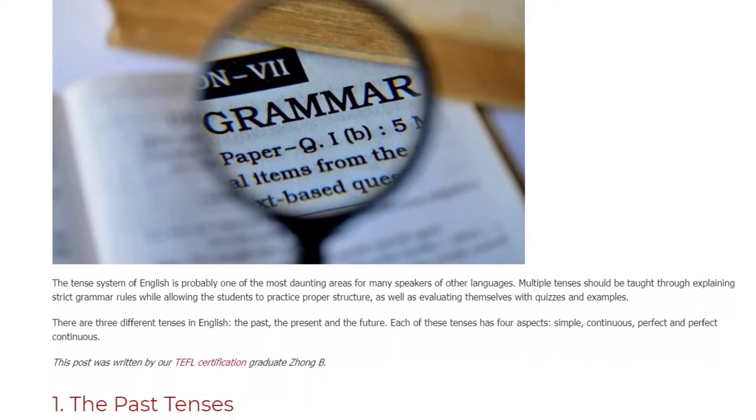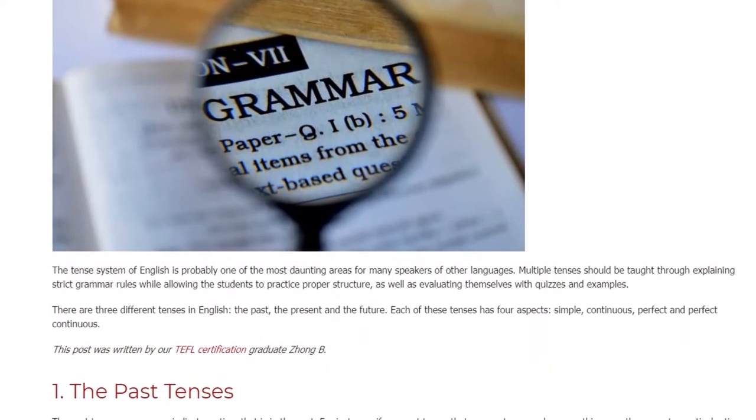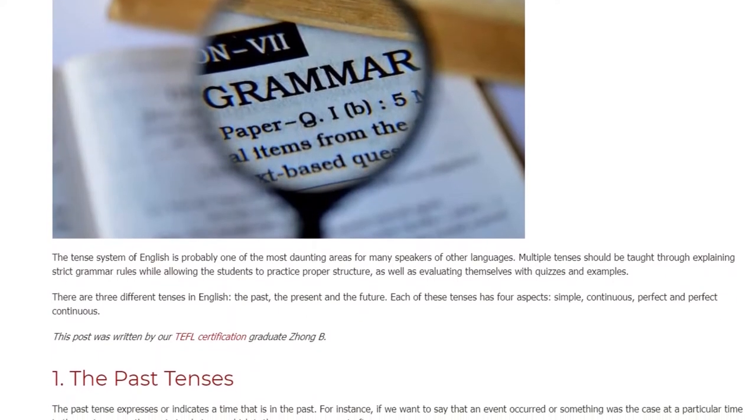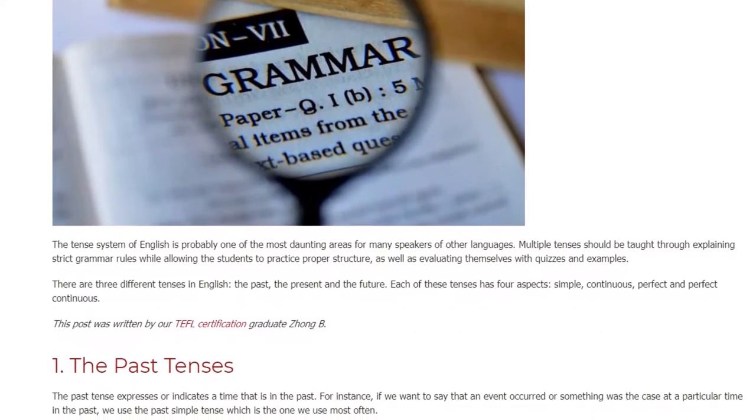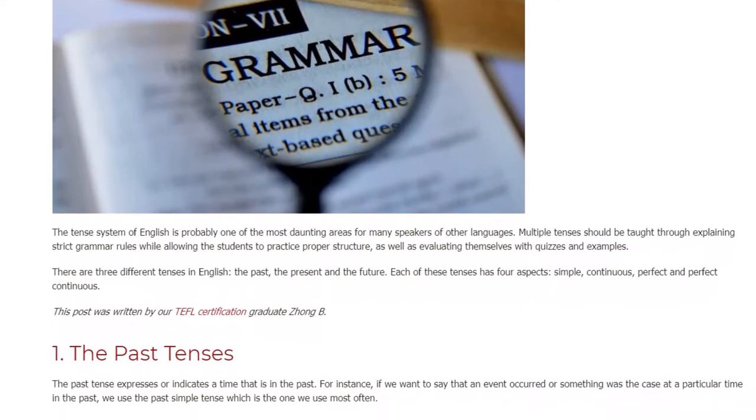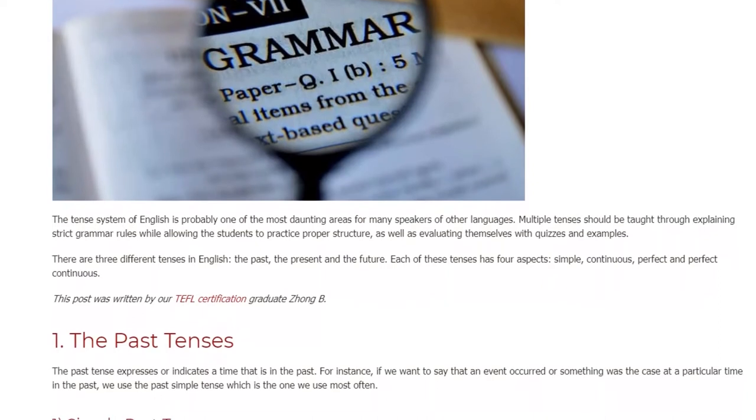There are three different tenses in English: the past, the present, and the future. Each of these tenses has four aspects: simple, continuous, perfect, and perfect continuous.